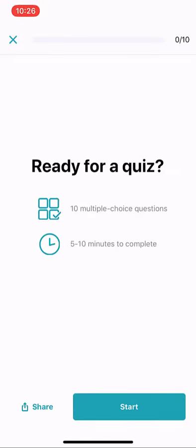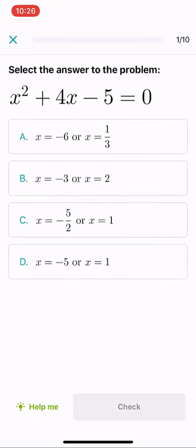Now I'm ready for the quiz. I'm going to get 10 multiple choice questions and 5 to 10 minutes to complete. I'll hit start. So here's the first question. Now I'm going to go and try and solve this. I'm going to just take a guess at letter B.